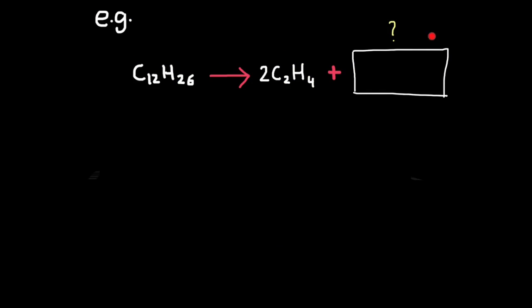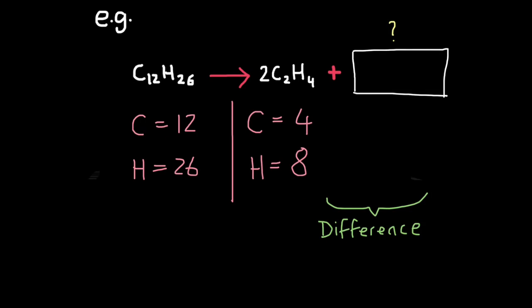More sophisticated exam questions might ask you to complete a chemical equation. These may look scary, but they're really simple. You just need to remember the idea of conservation of mass. Matter cannot be destroyed or created. So whatever's on this side must be found on this side as well. On this side, we have 12 carbons and 26 hydrogen atoms. Currently we have two molecules of ethene, so 2 times 2 carbons gives 4 carbons and 8 hydrogens. Now work out the difference: 12 carbons minus 4 carbons gives 8 carbon atoms. 26 hydrogen atoms minus 8 gives 18 hydrogen atoms. So the missing molecule would be C8H18.